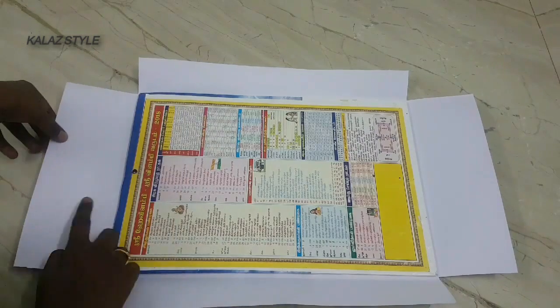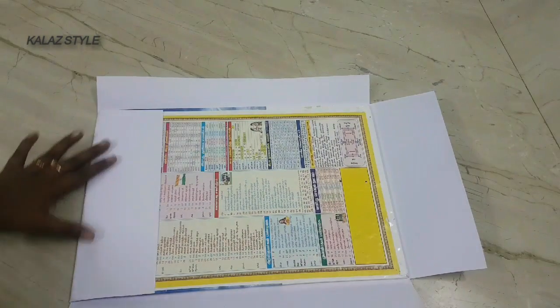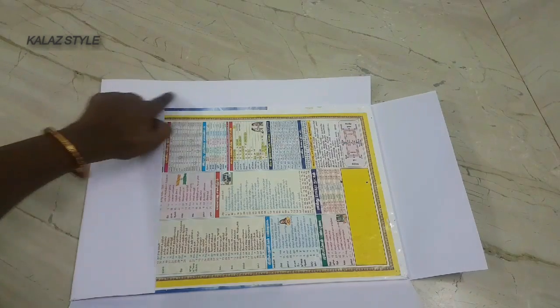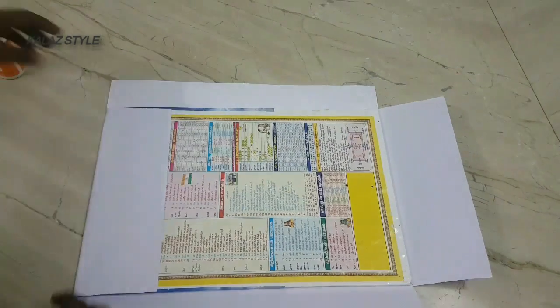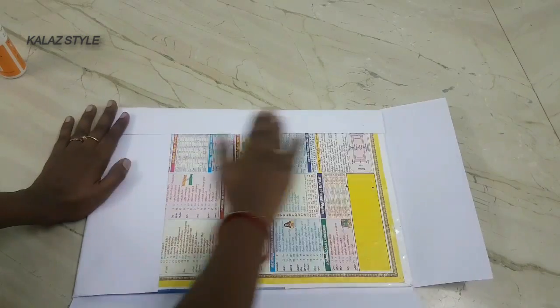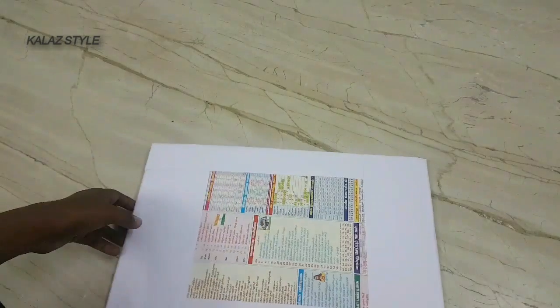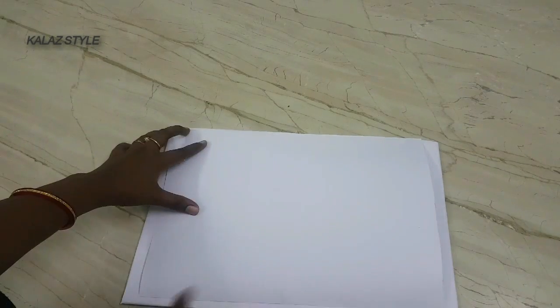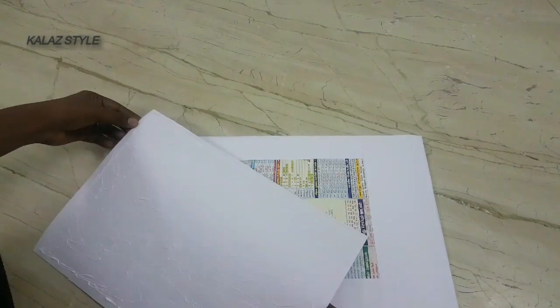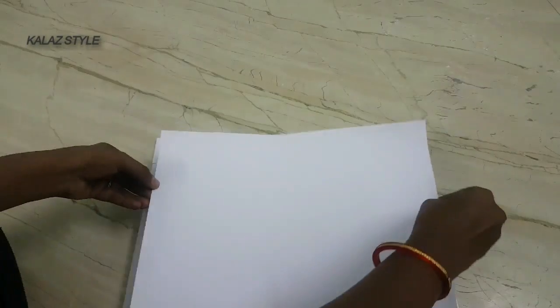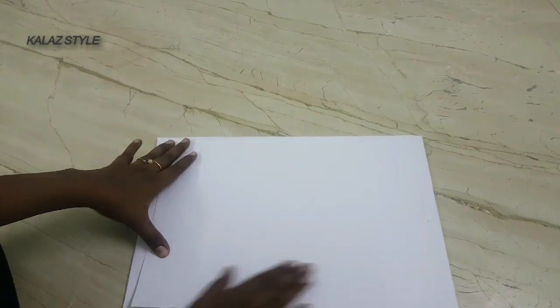At the corners, apply glue to the rest of the chart and stick it. Now this is our front side. Take a small size chart, apply some glue and stick it. Now draw the four sides margin on the front side.